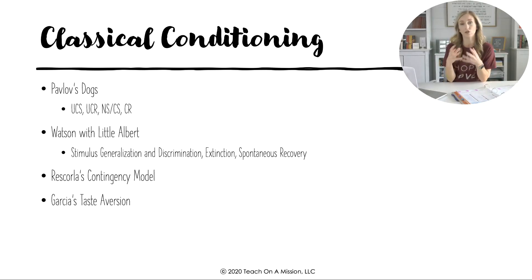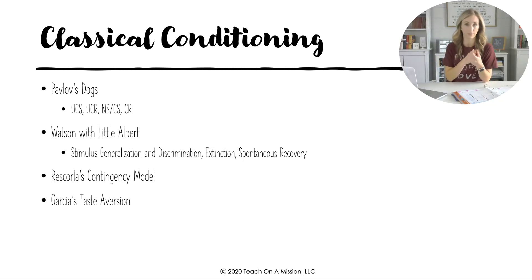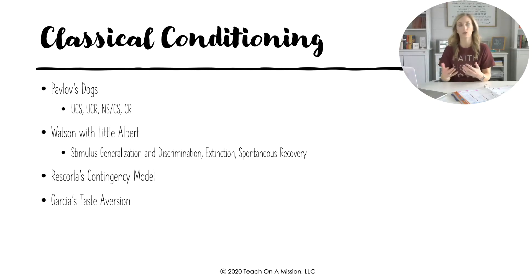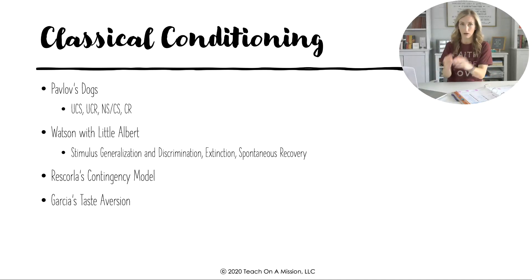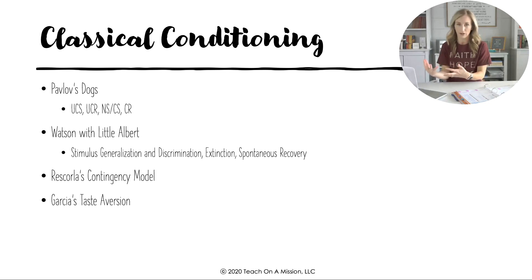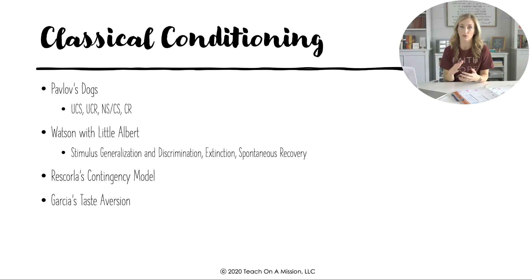Rescorla had a contingency model that added to classical conditioning. He said our brains — including Pavlov's dogs — are not robots; the dogs and babies were thinking about it. Rescorla adds cognition to conditioning, saying the more a subject can determine that stimulus A leads to B, the stronger the association. This also connects to Garcia's taste aversion, Tolman's latent learning, and Kohlberg's insight learning — make sure you go over all of those terms.